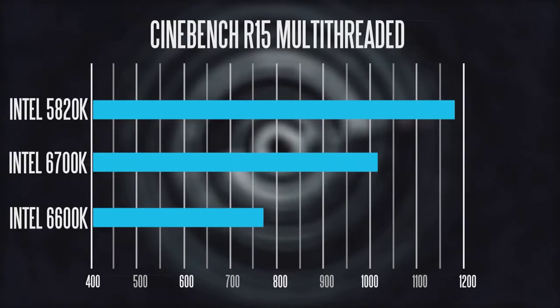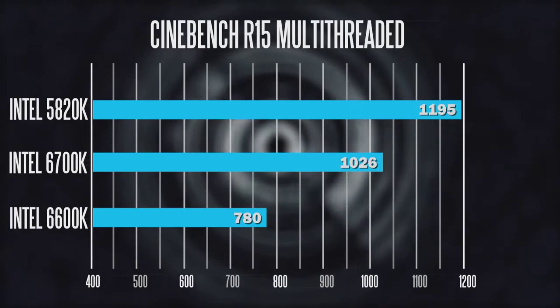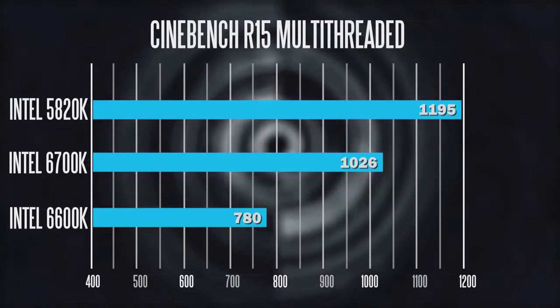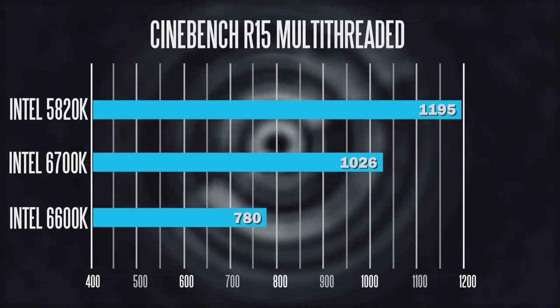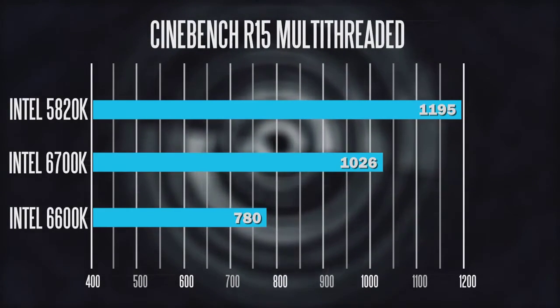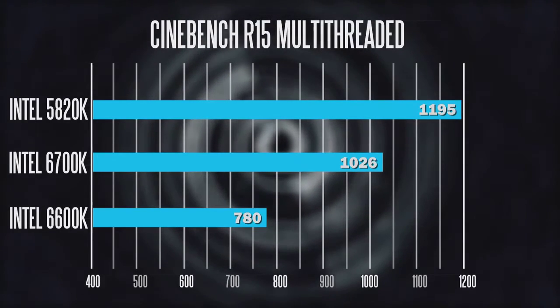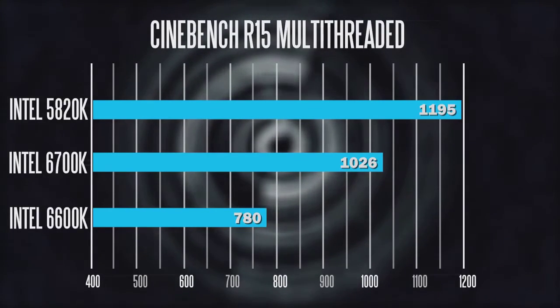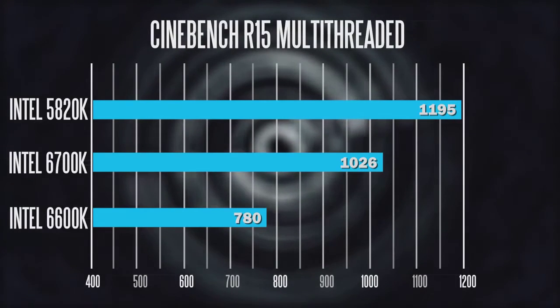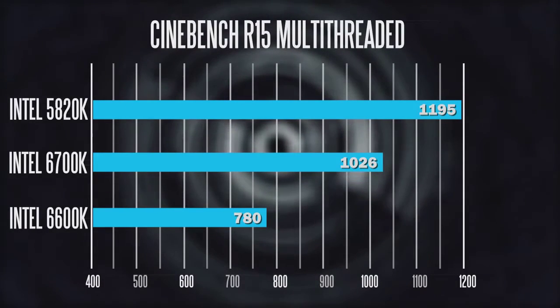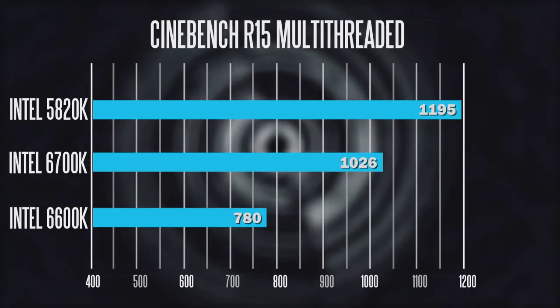Now let's look at performance differences between these three processors. First up is Cinebench R15, a multi-threaded application. The 5820K got a very impressive 1195 points, versus about 1026 points on the 6700K, and about 780 points on the 6600K. In multi-threaded applications, you're going to want as many cores and threads as you can afford, and this is where a 6-core processor with hyper-threading is really going to shine.